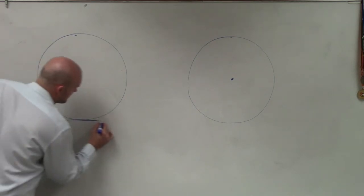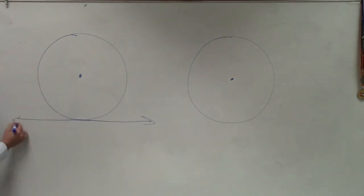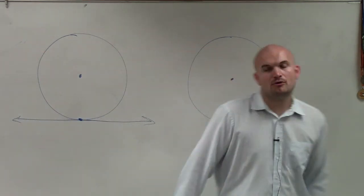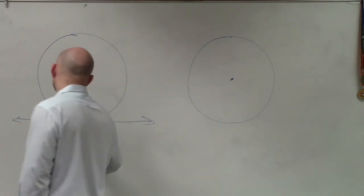So if we have a line that comes across a circle but it only intersects at one point, that is what we call a line of tangent.